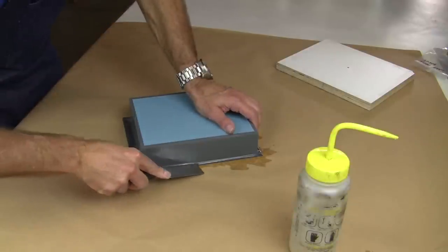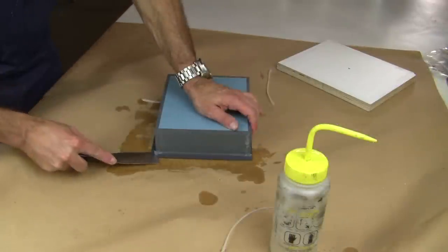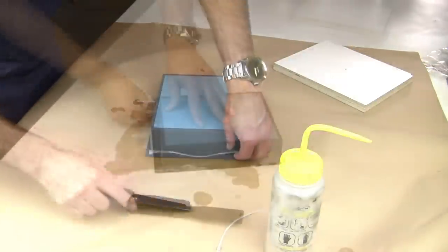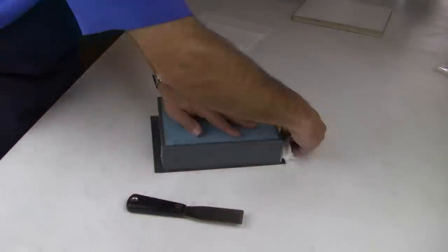After a moment to soak, a scraper easily removes the bead of glue. We wipe dry any remaining alcohol from the surfaces.